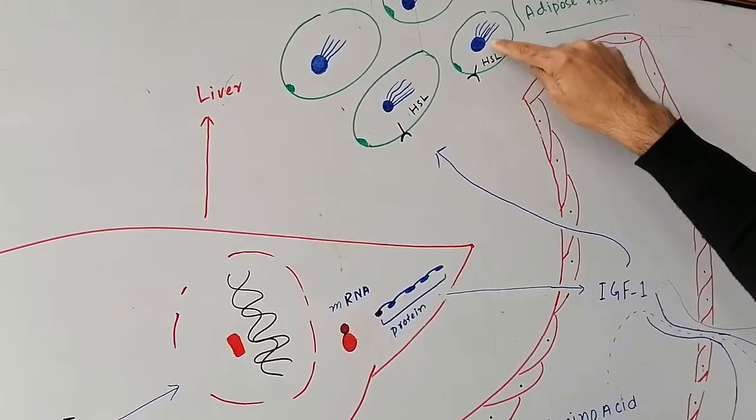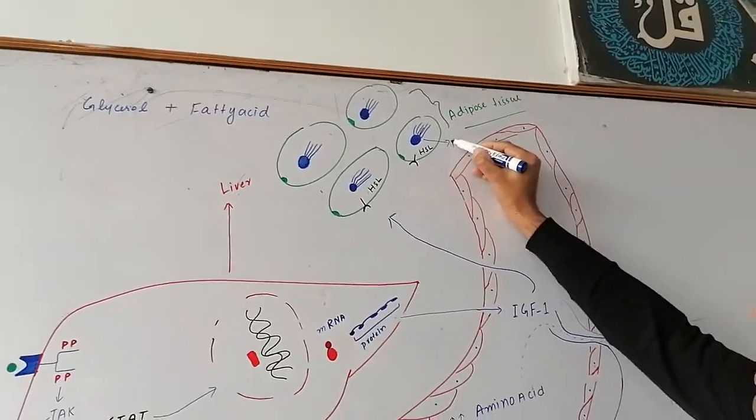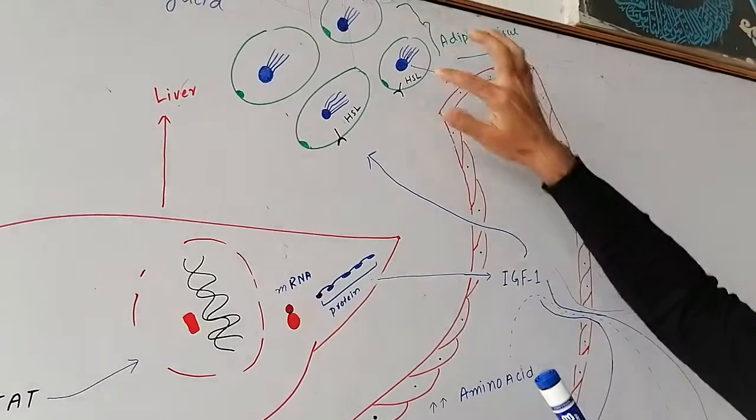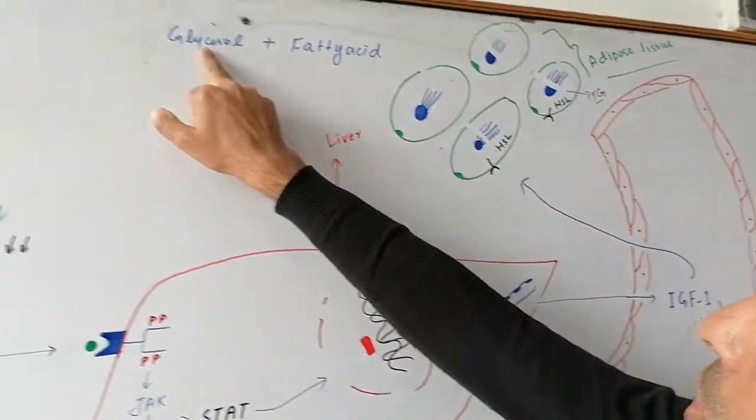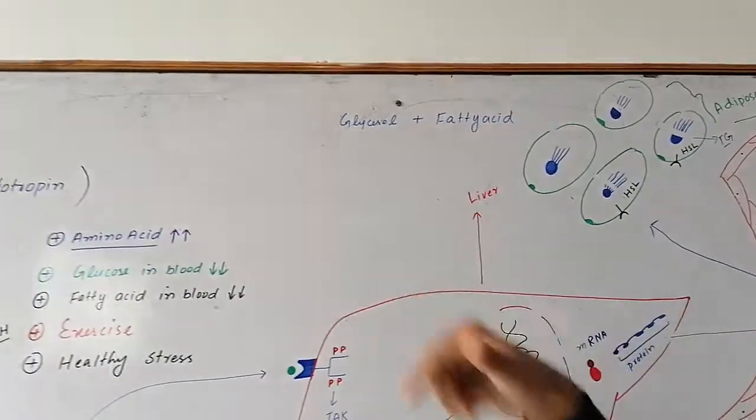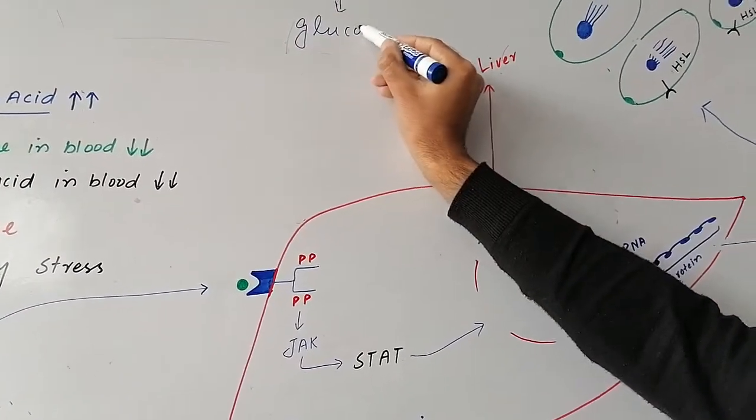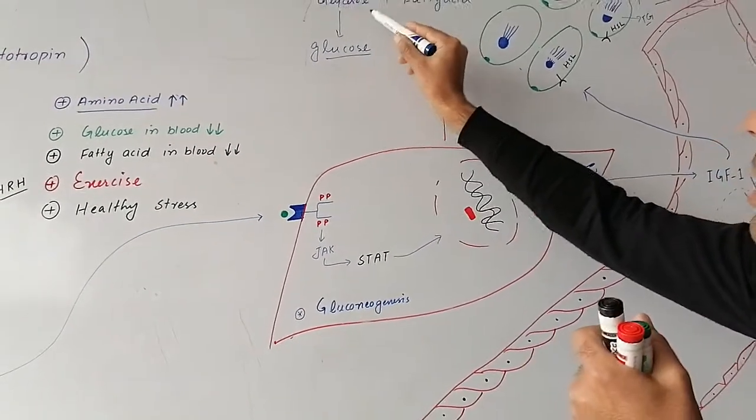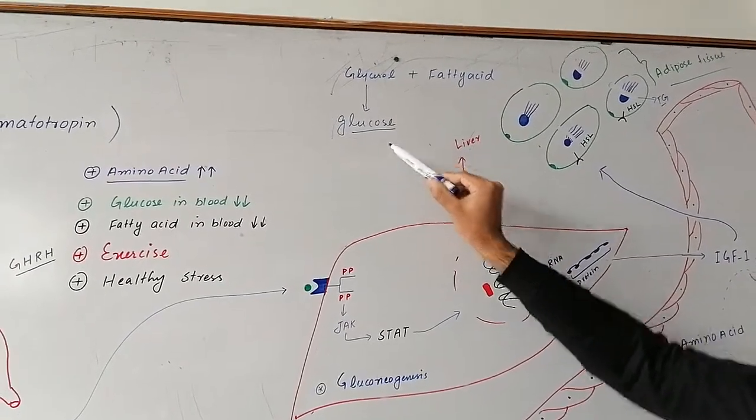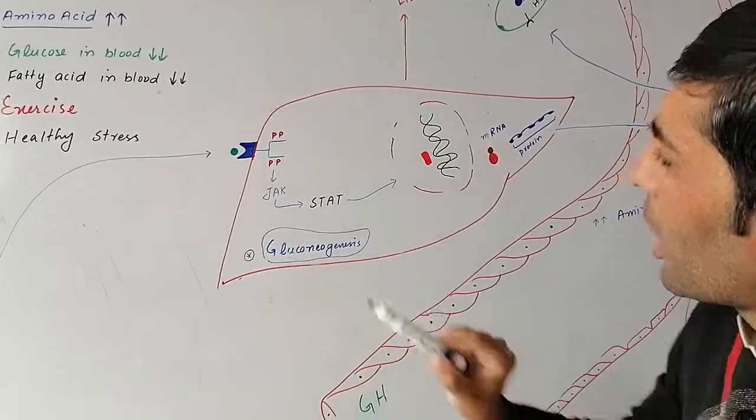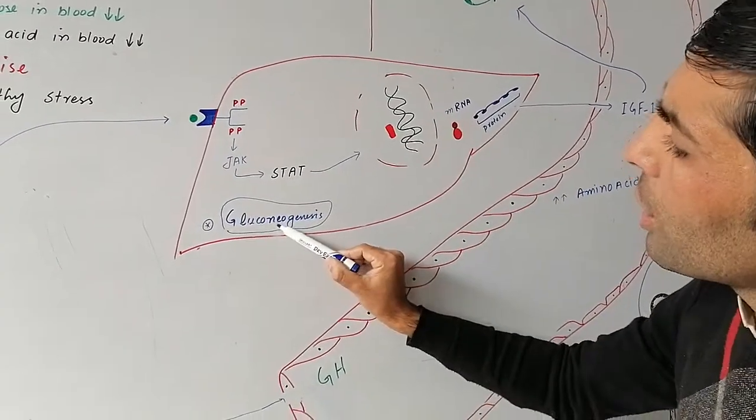Lipolysis of triglycerides occurs in adipose tissue, releasing glucose. This is called gluconeogenesis. IGF type 1 promotes gluconeogenesis.